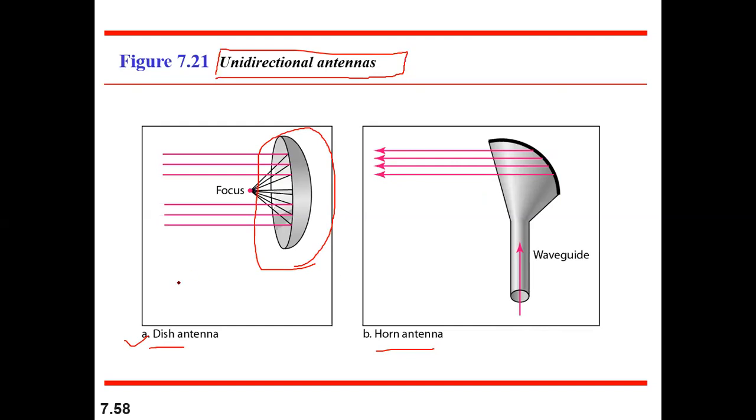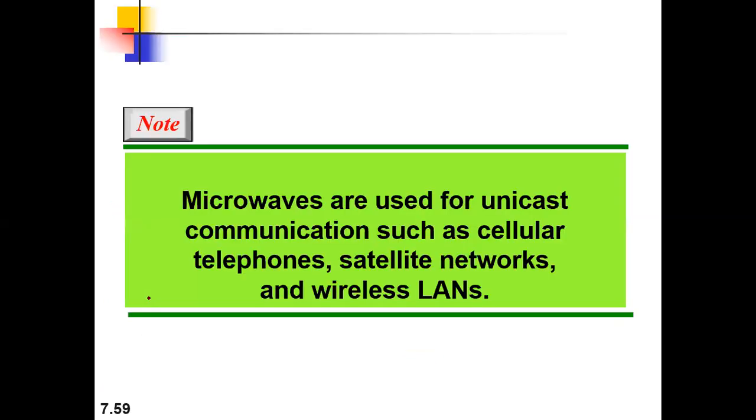These are basically used for unicast communication in one-on-one communication. In order to use this antenna the sending antenna and the receiving antenna they must be aligned. They must be faced towards each other. Microwaves are normally used for unicast communication like cellular telephones, satellite networks or wireless lamps.